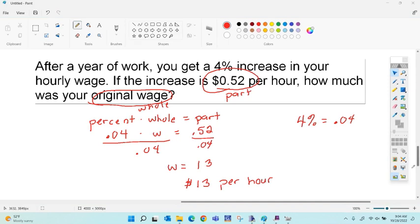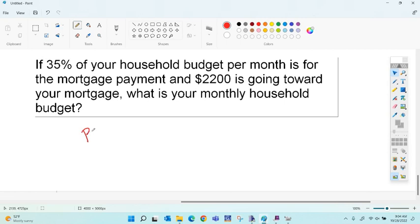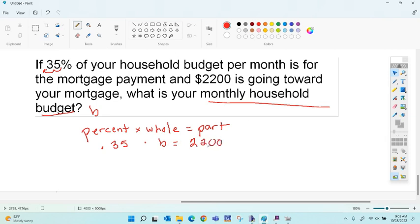Last one. Let's just at least make sure we can get this set up. Percent times whole equals part. What goes here? Which, what is the decimal? We say .35. Move it two places. .35. .35 is for the mortgage payment of $2,200. Your household budget is going to be the whole part. The household budget is the whole part. So there's my budget. And the part that's the mortgage is $2,200. And then you do the same thing. Finish it. And it would be done. Divide by .35. And you get it. But you know how to do it.